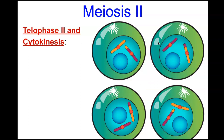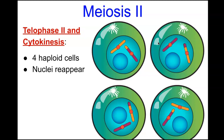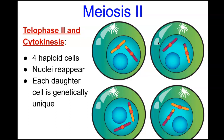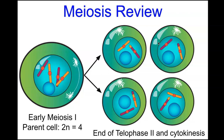In anaphase II, the sister chromatids separate and move toward opposite poles of the cell. In telophase II and cytokinesis, we get four haploid daughter cells — for humans, each with 23 chromosomes. The nuclei reappear, the mitotic spindle disappears, the nucleolus returns, and each daughter cell is genetically different or unique from the others.